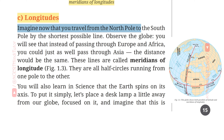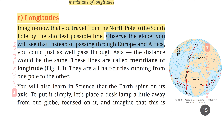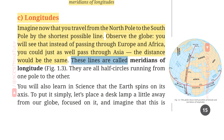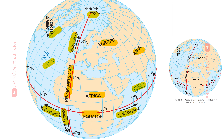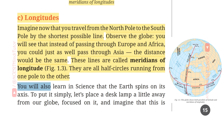Imagine you travel from the north pole to the south pole by the shortest possible line. Observe the globe — instead of passing through Europe and Africa, you could just as well pass through Asia; the distance would be the same. These lines are called meridians of longitude (figure 1.3). They are all half circles running from one pole to the other.